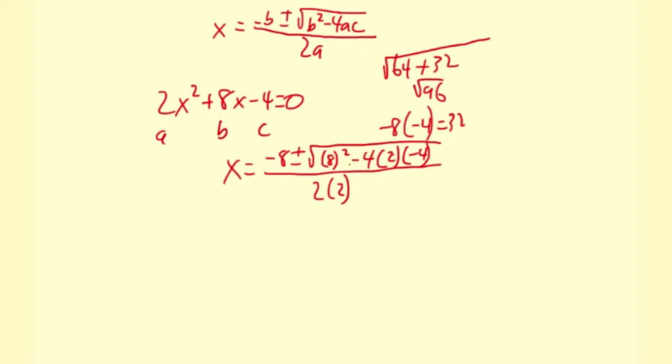Okay, so this square root is 96. So x equals negative 8 plus or minus square root of 96 all over 4. So next thing, because we want an exact answer, is to simplify 96. I'm going to factor it: 2, 48.